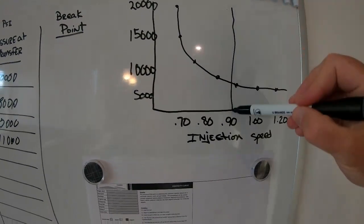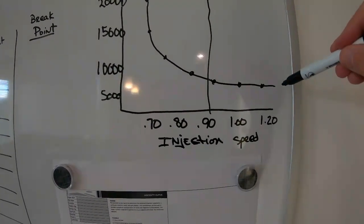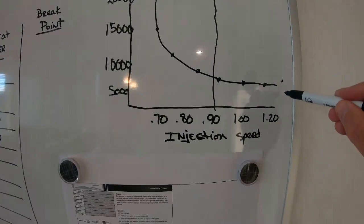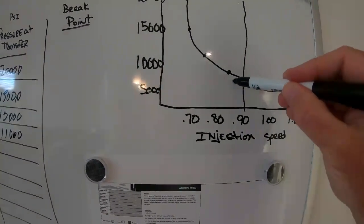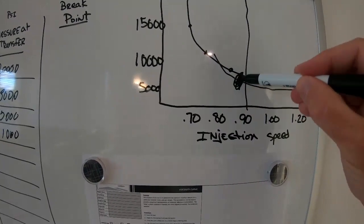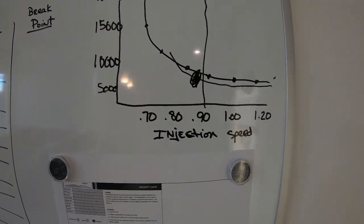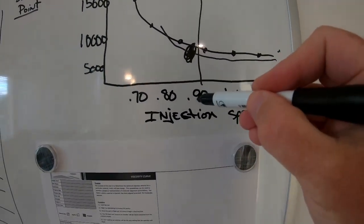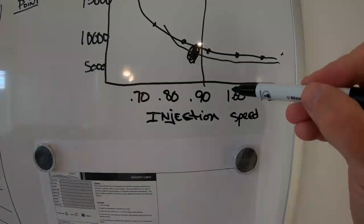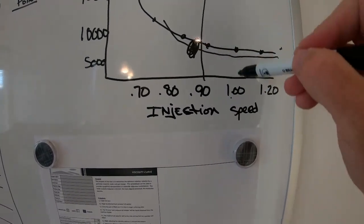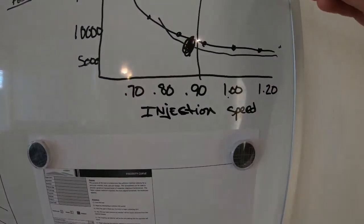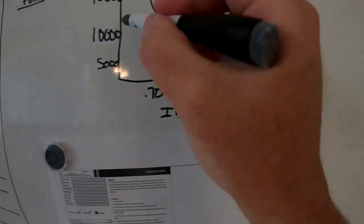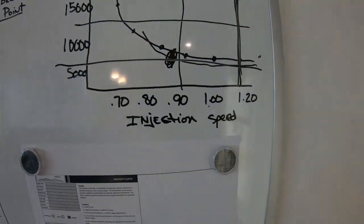What you want is to work from the right side of the curve. You don't ever want to go in real slow and have your pressures peaked out. You want your speed to be pretty level all the way across until it starts to break — as soon as it starts to break, that's where you want your speed setting to be. For example, if your optimal speed is 0.9 inches per second, you could go up to 1.0 or 1.1 and still be within the acceptable pressure range.